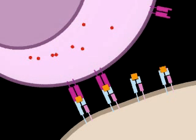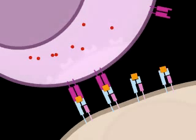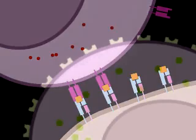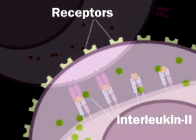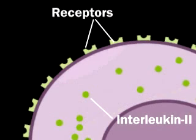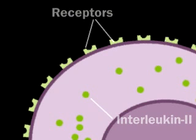The activated T cell now produces a different cytokine, interleukin-2, as well as cell surface receptors for IL-2. IL-2 triggers helper T cells to divide.